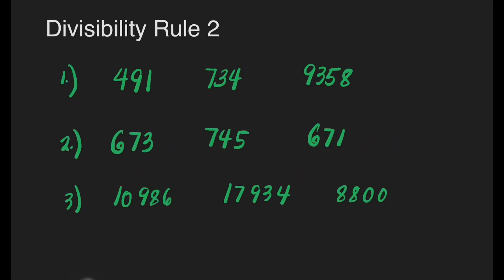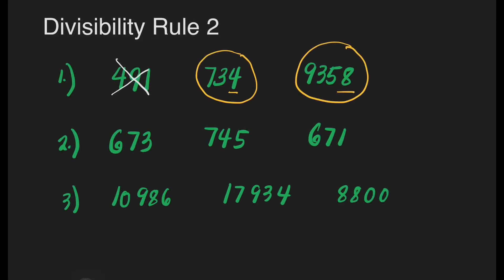Let us have an activity identifying which of these numbers are divisible by 2. For number 1, let us encircle numbers that are divisible by 2. We will just check the last digit of the number. This first one is not divisible by 2, but this one — yes — it is divisible by 2 because it ends with 4. How about 9,358? Yes, this is also divisible by 2 because it ends with 8. For number 2, there is no number divisible by 2 because they all end with an odd number. A number has to end with an even number to be divisible by 2, so all 3 numbers are not divisible by 2.